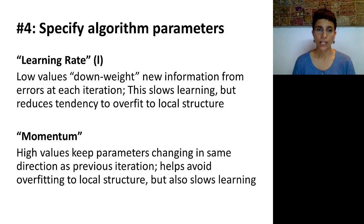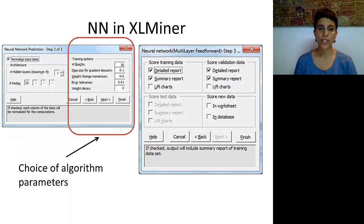The other parameter that we might want to change is called the momentum. What this does is it keeps the algorithm going in the right direction. If we have high values of the momentum, then the parameters are going to be changing in the same direction as the previous iteration. If we want them to jump in different directions, then we're going to have to take the momentum value and bring it a little bit down. So again, these two parameters are going to help us a little bit with trying to control the overfitting on one hand and the learning ability of the algorithm on the other hand. If you're using XLMiner, here is where you can make the choices about the learning and the momentum parameters.